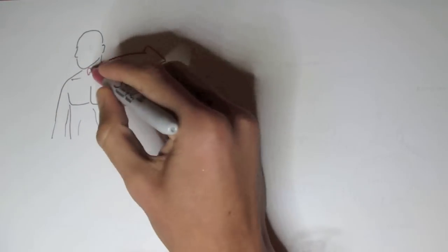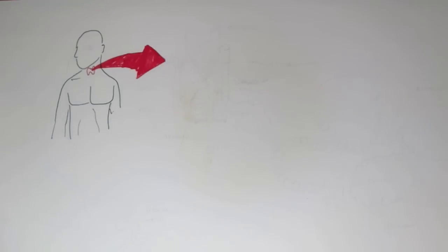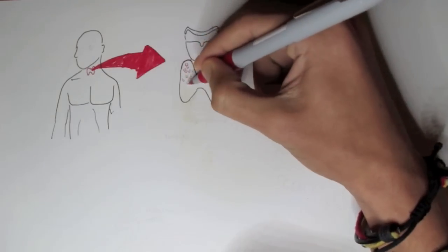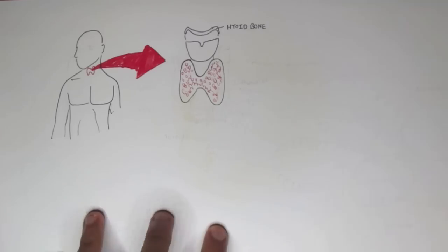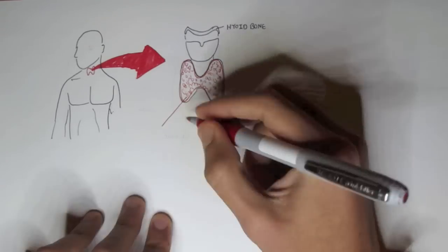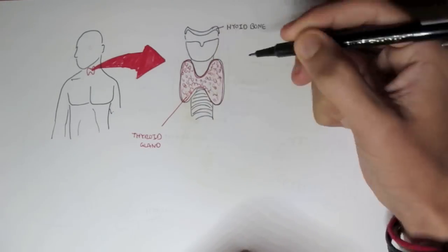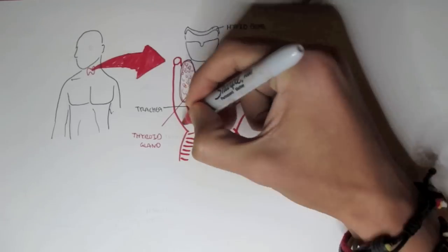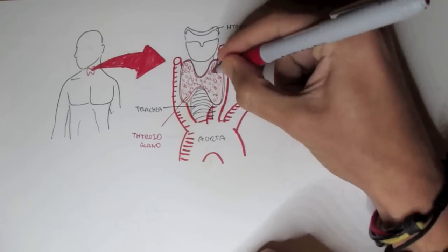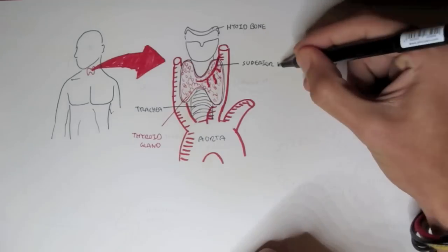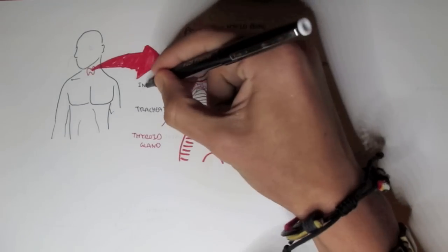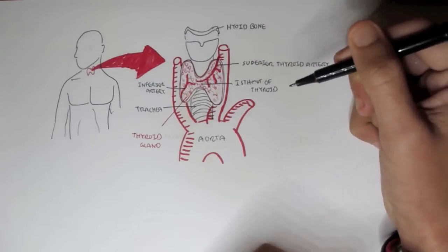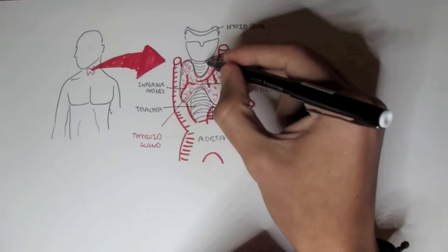The thyroid gland produces thyroid hormones which regulate many metabolic processes in our body. The thyroid gland is situated around the throat. If we zoom into this section we can find the hyoid bone, and underneath it is the larynx. This butterfly-looking structure is known as the thyroid gland. Below it is the trachea connecting to the lungs. Blood supply comes from the aorta via the superior thyroid artery and also the inferior thyroid artery. The isthmus connects the two lobes of the thyroid gland together.